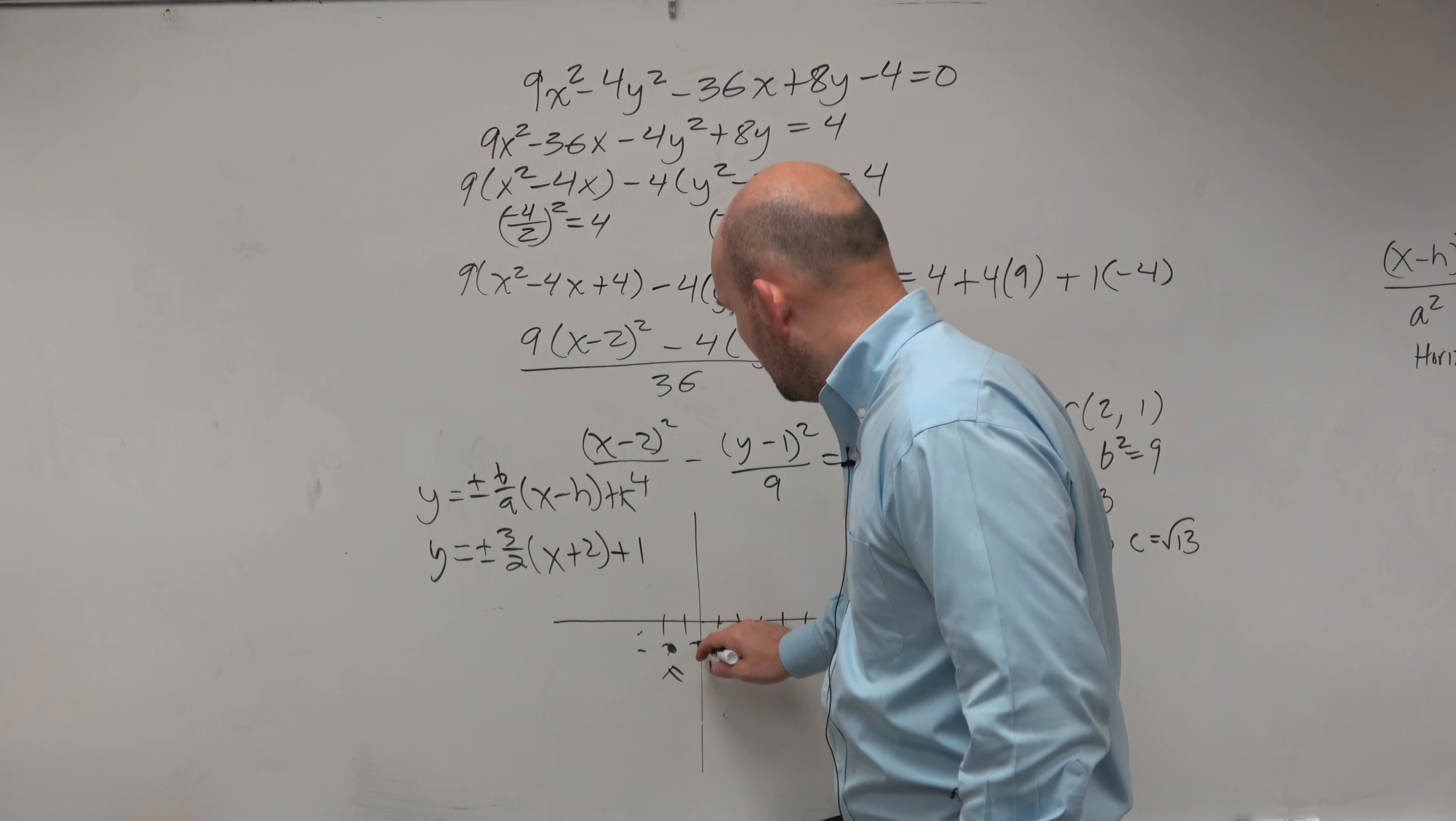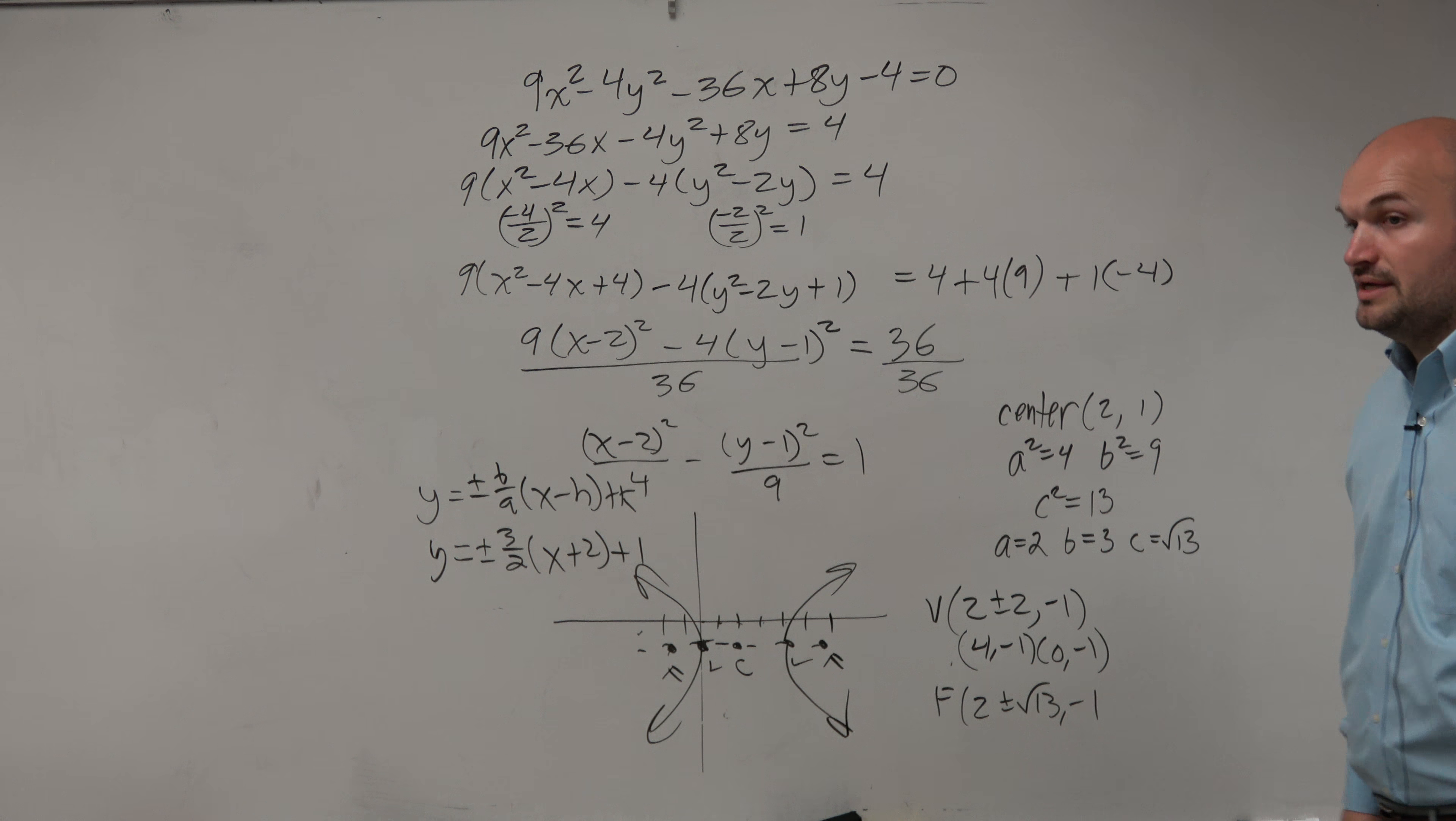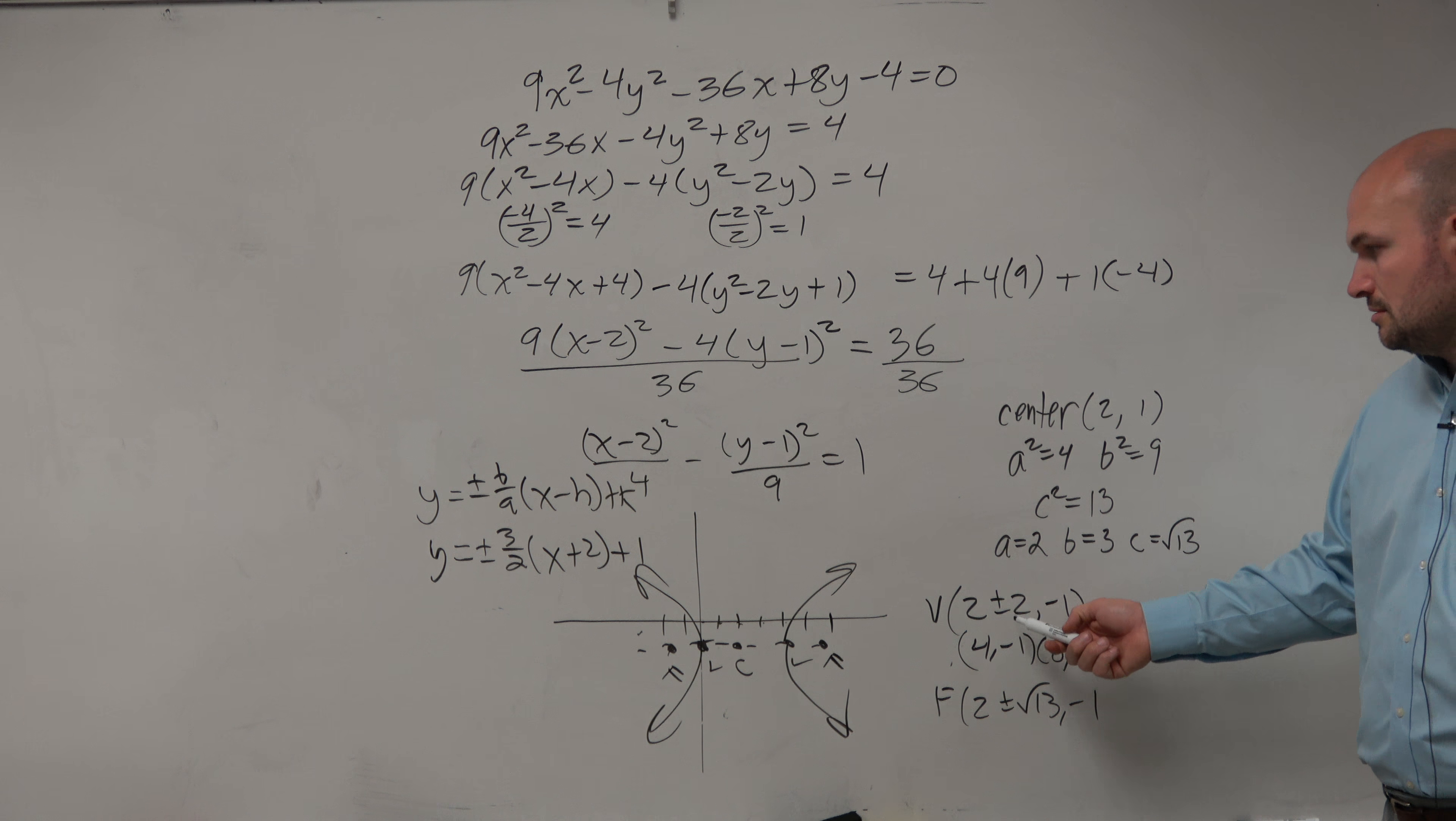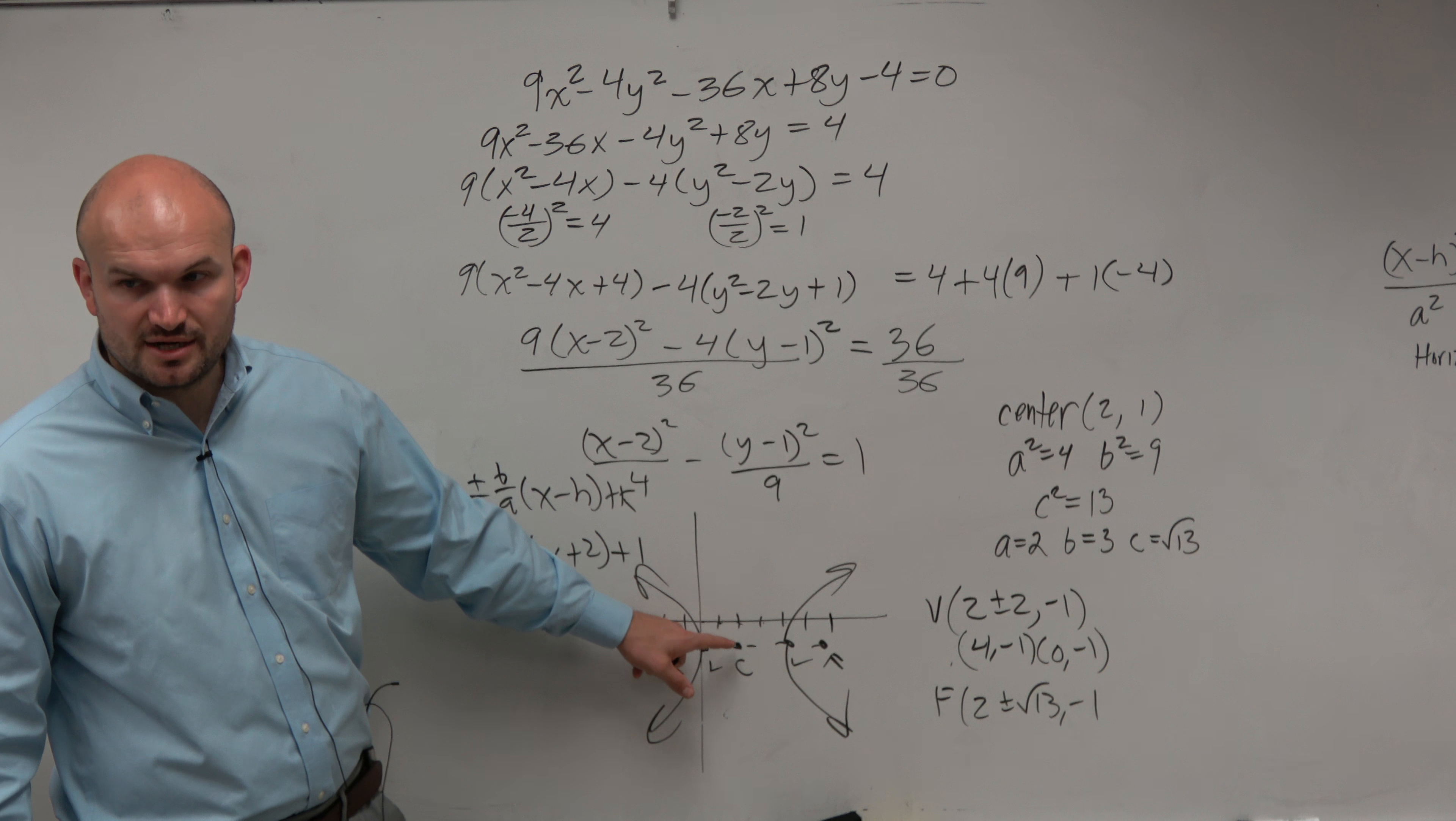And then the asymptotes, I will just write that. Since it's a horizontal transverse axis, the equation is y equals plus or minus b over a times x minus h plus k. So just plugging in my values, my b over a is going to be plus or minus 3 halves times x plus 2. Where's my k? k is what? Plus 1.